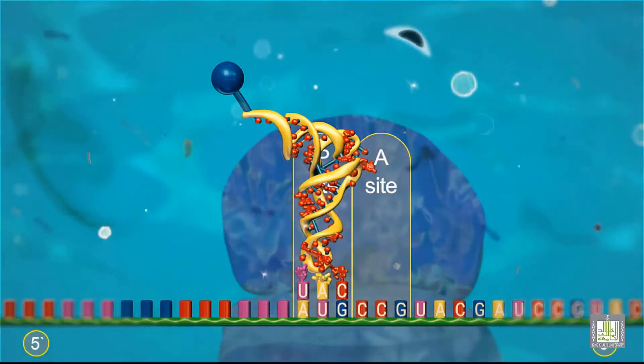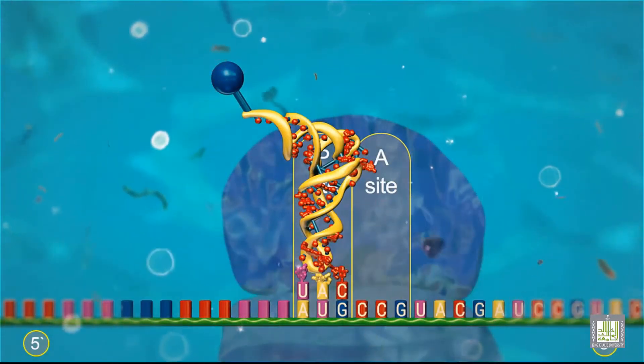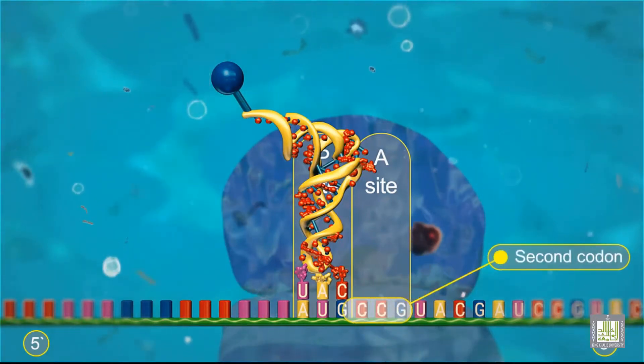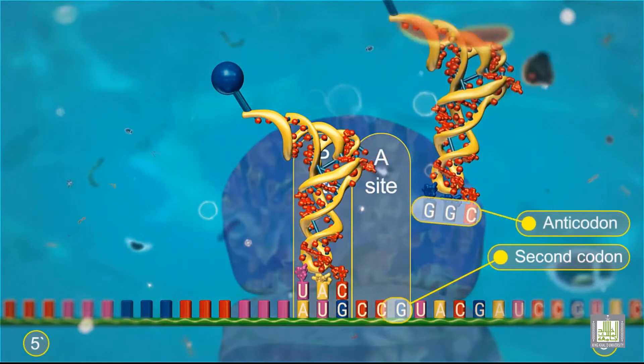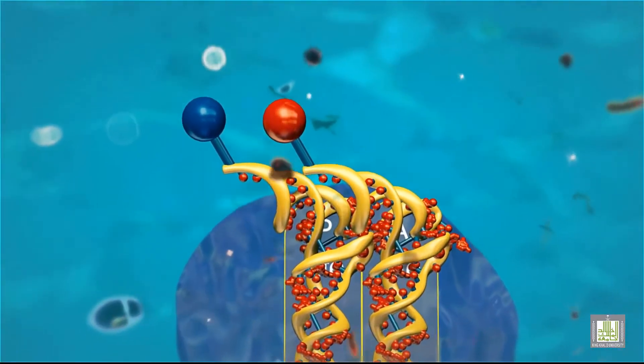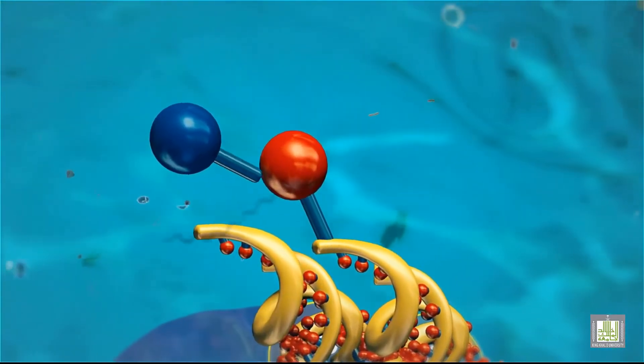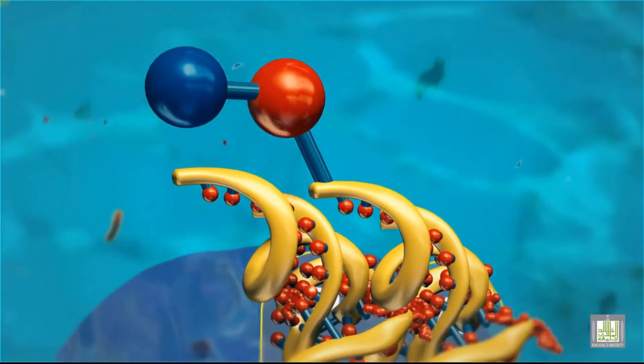The initiating transfer RNA, carrying its amino acid, binds to the P-site. A transfer RNA that recognizes the next codon and carries the second amino acid then moves into the A-site. The amino acid carried by the transfer RNA in the P-site is then joined to the amino acid carried by the transfer RNA that just entered the A-site.